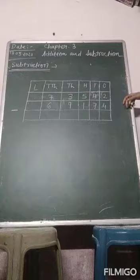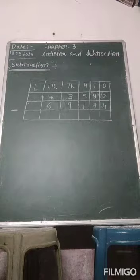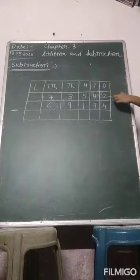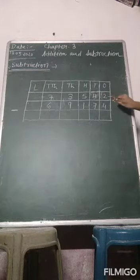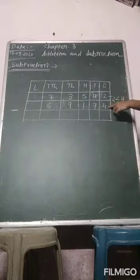Now students, subtract the digits in the ones column and observe what is the digit in ones place of the first number. It is 2, and 2 is always less than 4. Then what will we do? So 2 cannot be subtracted from 4.